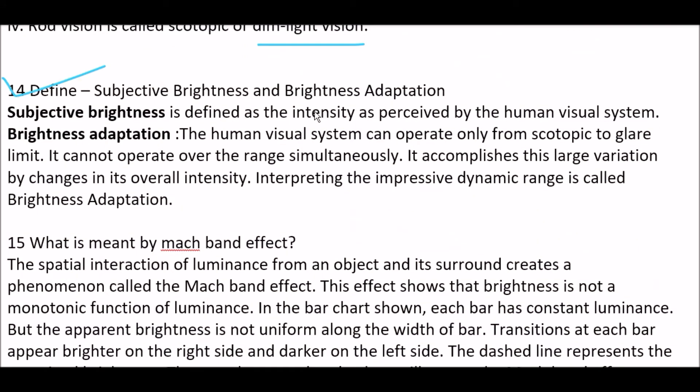Next question. Define subjective brightness and brightness adaptation. Answer is, subjective brightness is defined as the intensity perceived by the human vision system. And in brightness adaptation, the human visual system can operate only from scotopic to glare limit. It cannot operate over the range simultaneously. It accomplishes the large variation by changes in its overall intensity, and this phenomenon is called brightness adaptation.